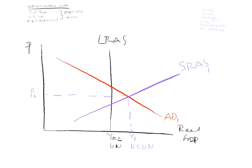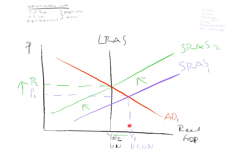So let's graph that. There will be a shift to the left, and we will end up back at long-run equilibrium. Do not forget to also state that the price level has gone up — if you do not state that, you have not fully answered the question and you will lose marks. You graph this, explain the mechanism, and show the movement from Y1 to YFE. Do not forget to also show the movement from P1 to P2.